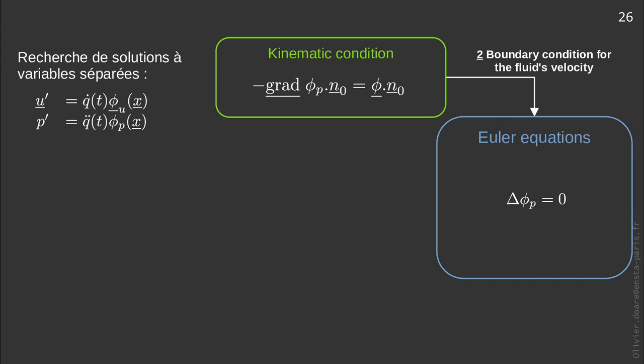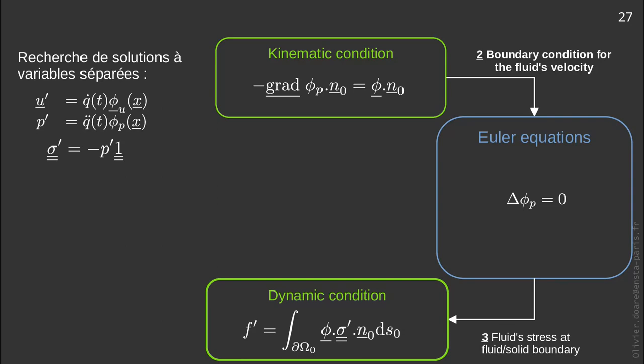Let us assume that we are able to solve these equations. It remains to calculate the stress fluctuation in the fluid and to project it in the considered mode. In this non-viscous case, sigma simply depends on the pressure. By transferring this into the expression of the fluid force, and by taking out q' dot, which does not depend on space, we obtain in an explicit way the fluid force where appears in factor the acceleration of the solid.